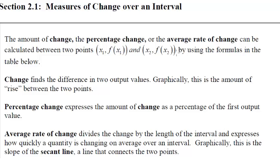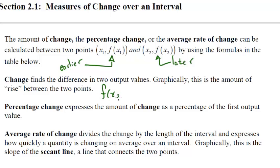All of these are calculated between two points. In our notation, the subscript one refers to our earlier point and subscript two refers to our later point. To find change, this is just the difference in our output: output later minus output earlier. The units for change are just the output units.